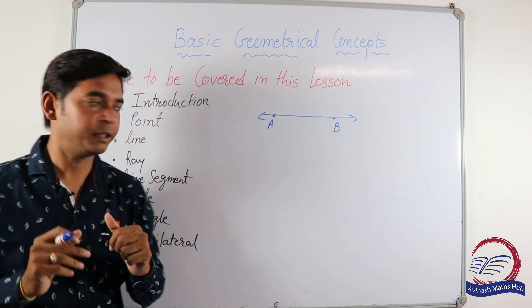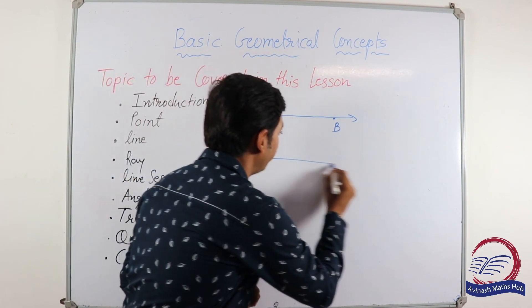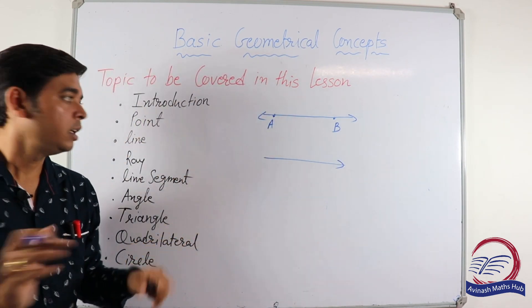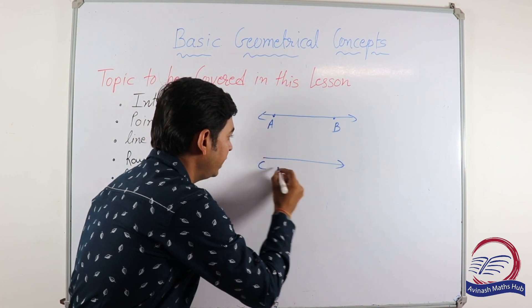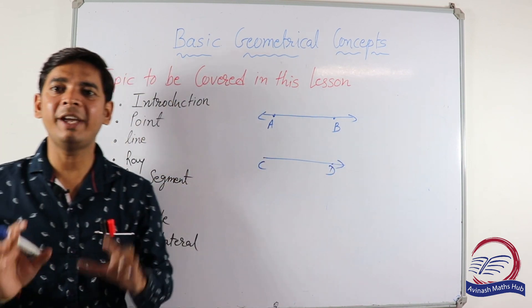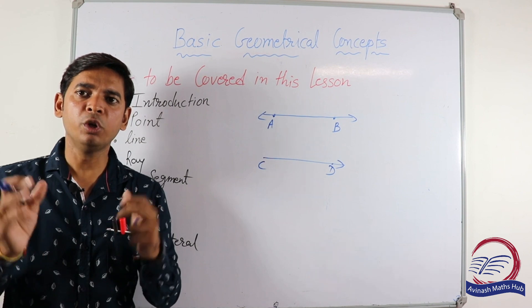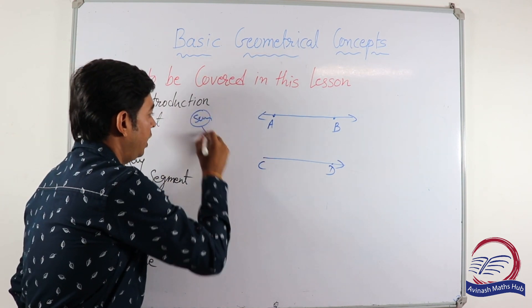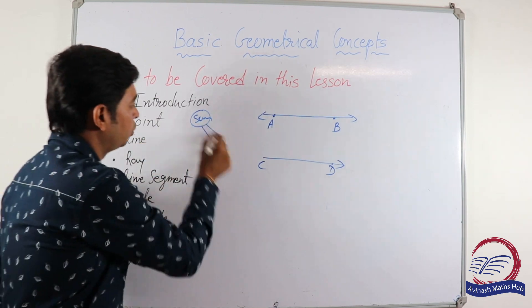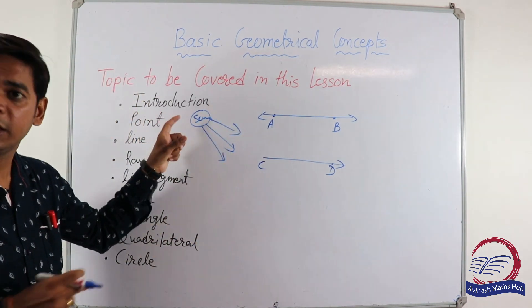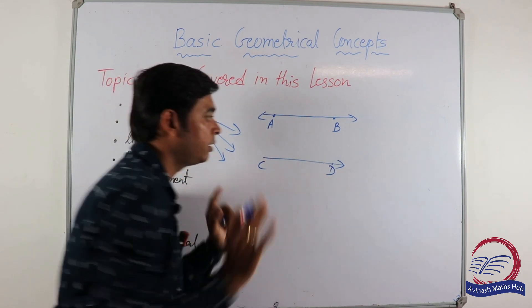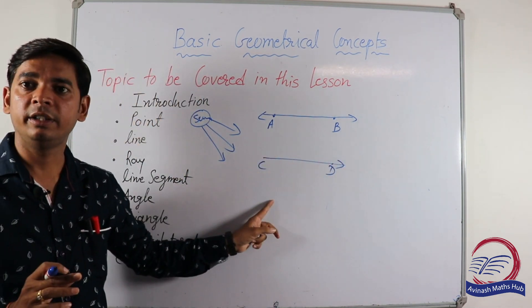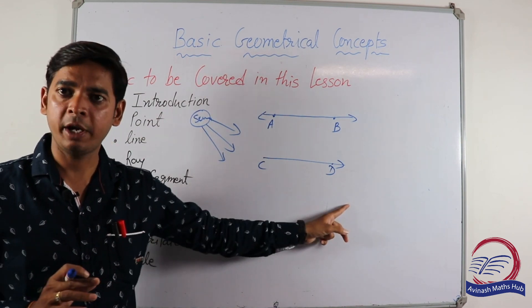Now next is ray. What is ray? A ray is a line segment extending only in one direction. Think about points C and D. What is the best example of a ray? We know sun rays. Think about the sun. There are so many sun rays coming out from the sun. If you draw one ray, it will become like this. It's ray CD.